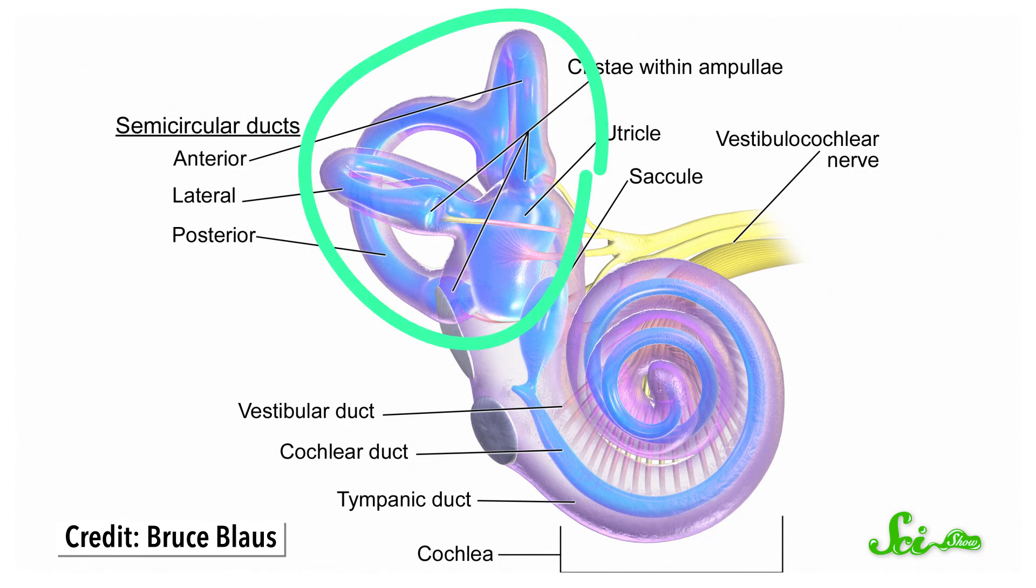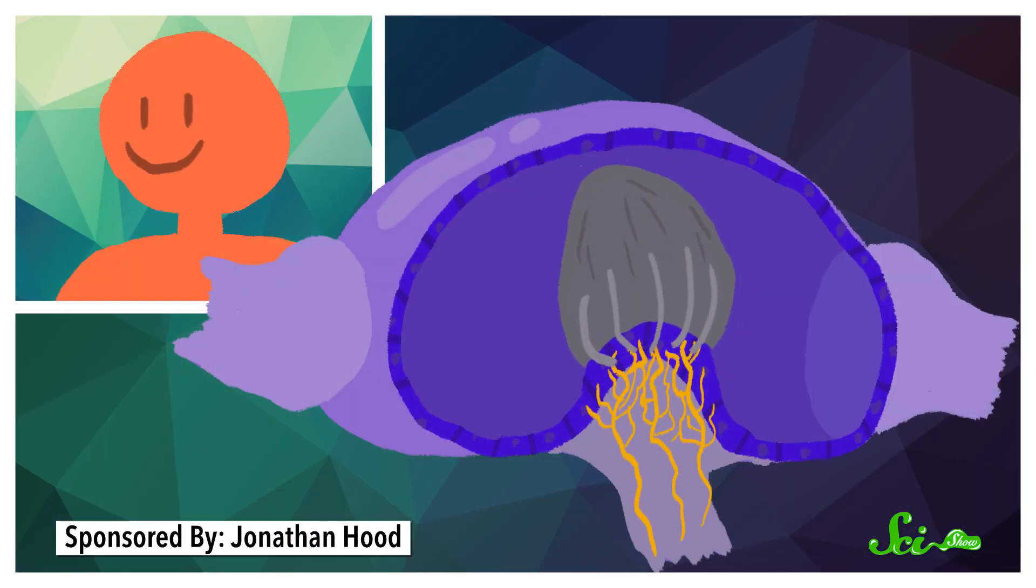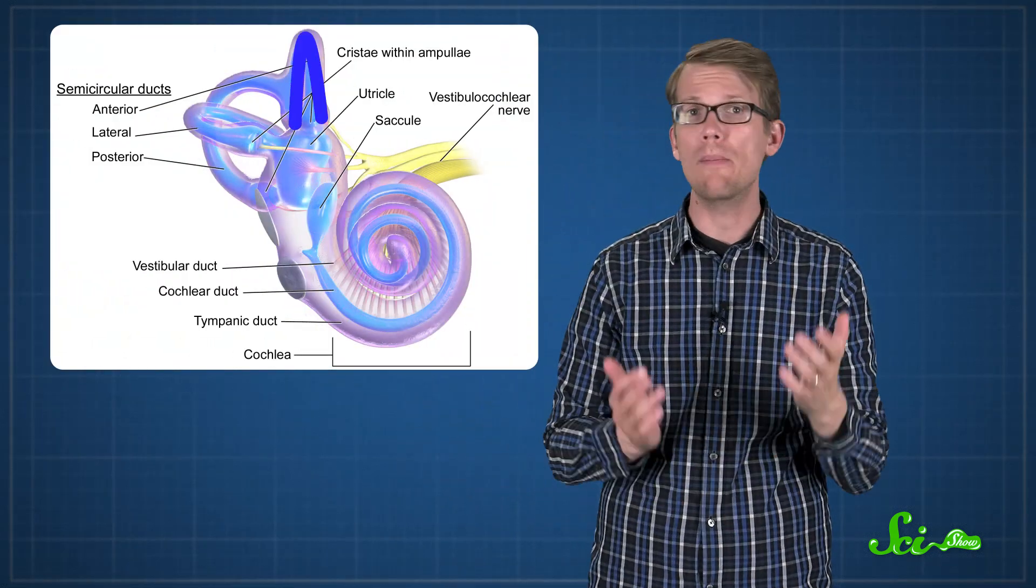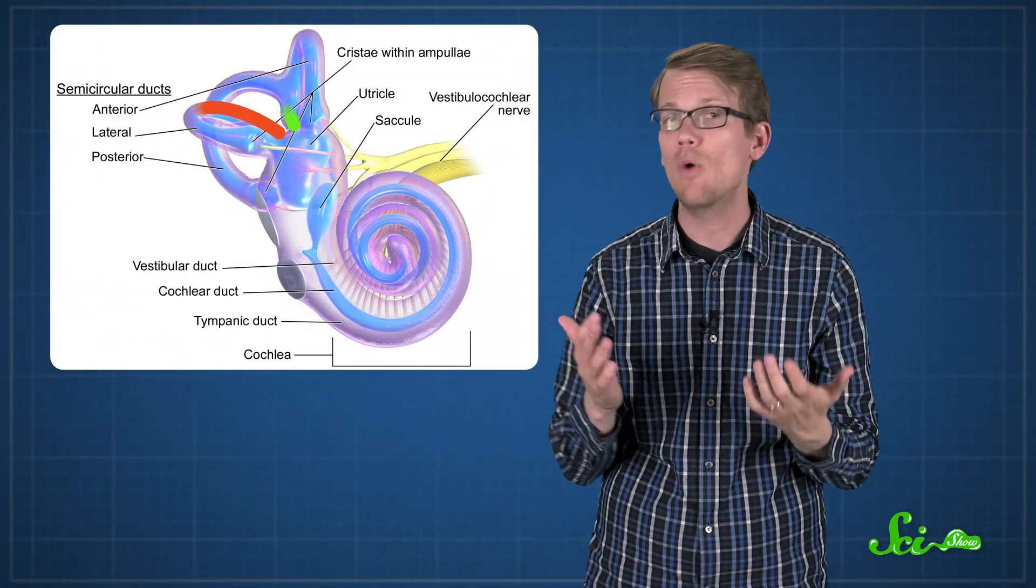When your head moves, these hair cells are sloshed around by the fluid and send signals to the brain, specifically to the vestibular nuclei in the brain stem. Each canal is responsible for a different kind of movement. One for up and down, one for left and right, and one for side to side.